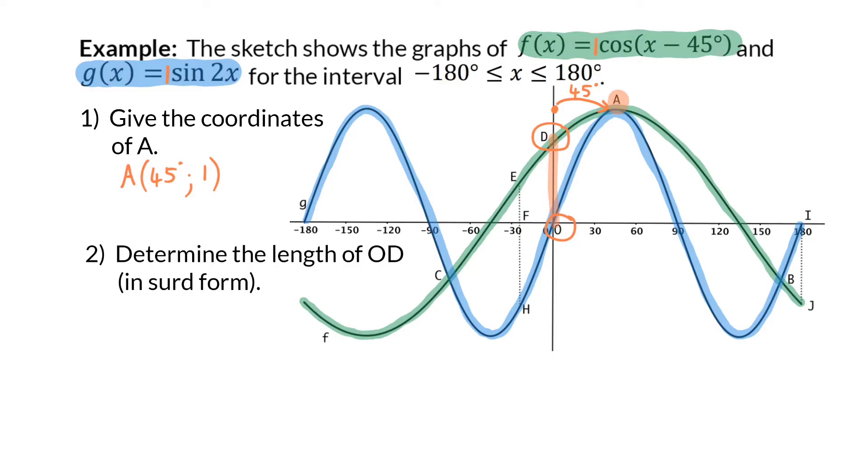D is the y-intercept of graph f, and to determine a y-intercept, we simply take the equation and substitute x with 0, and this we can then determine on our calculators, and we'll get square root 2 over 2. That is then the y-value of coordinate D, which means that OD will also be square root 2 over 2.